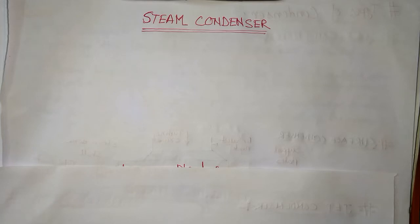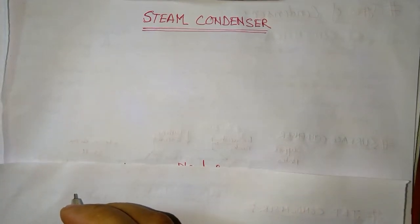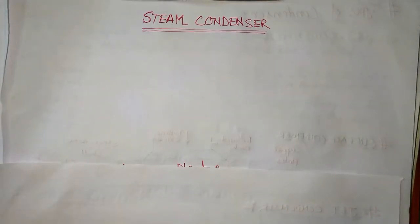Hello. So last class we discussed and completed the steam power plant, where we saw the four main components: boiler, turbine, pump, and condenser.